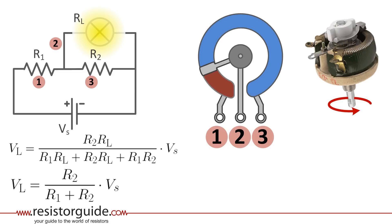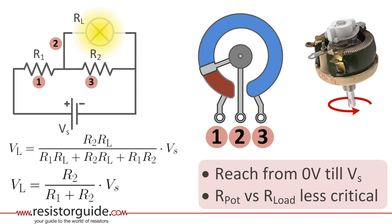If the wiper is on one end and R1 is zero, it means that the voltage through the load is the same as the source voltage. If the wiper is on the other end, R2 is zero, which causes the load voltage to be zero. This ability to adjust from zero to 100% is an advantage of the potentiometer over a variable resistor in series with the load. The second advantage over the rheostat is that the ratio of resistance of the potentiometer and the load is less critical. For the rheostat, a big or small load could make the rheostat resistance excessive or negligible.